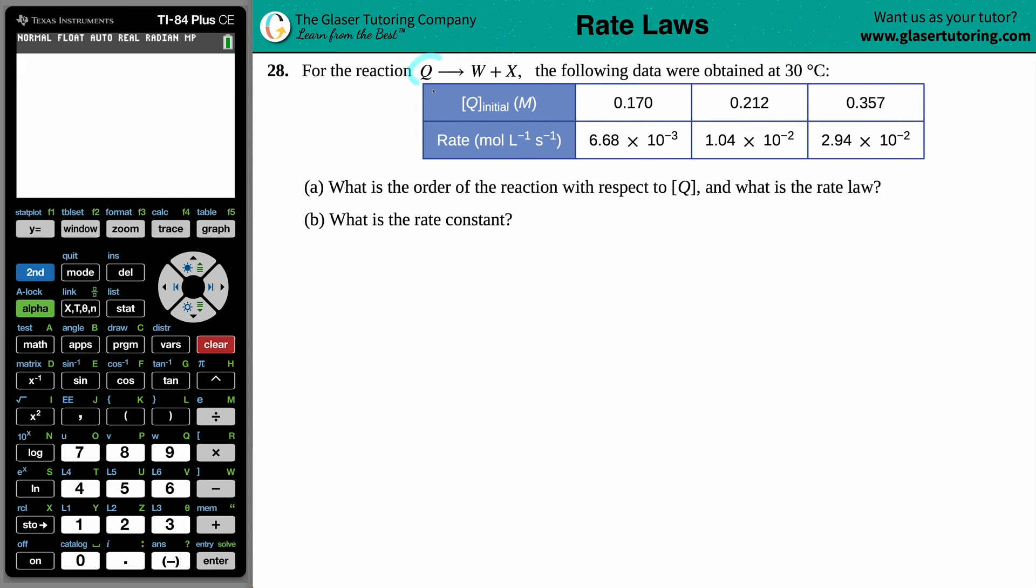Number 28. For the reaction Q yields W plus X, the following data were obtained at 30 degrees Celsius. So we have this lovely chart here, which basically says that if I have a concentration, a molarity for Q initially, the reactant, the rate of the reaction is going to go at 6.68 times 10 to the negative 3 molarity per second. And it seems like there are three total trials here. As you're increasing in concentration from 0.17 to 0.212 to 0.357, the rate of the reaction is generally increasing as well. So this follows a general trend that if you do have more of your concentration of a reactant, the rate is going to increase.